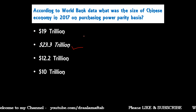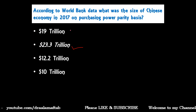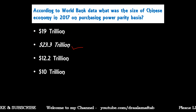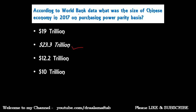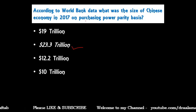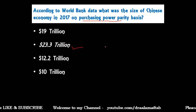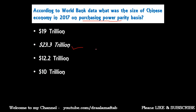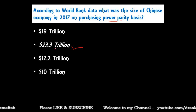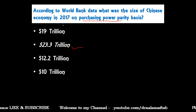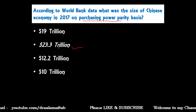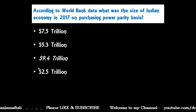Students, whenever you are attempting questions based on data, you must keep in mind which year's data they are asking for and which organization's data, because data is released by several organizations like World Bank, IMF, RBI, NITI Aayog, and so on. Data may be on nominal terms or on Purchasing Power Parity, so keep these things in mind. In 2017, the Chinese economy was the largest economy with 23.3 trillion dollar GDP.